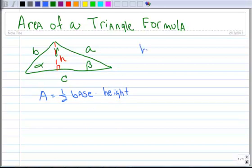All right, so in this triangle, we're going to say the base is C, just because that's the way I have it drawn, and we're going to say the height is H, because that's the way I have it drawn.